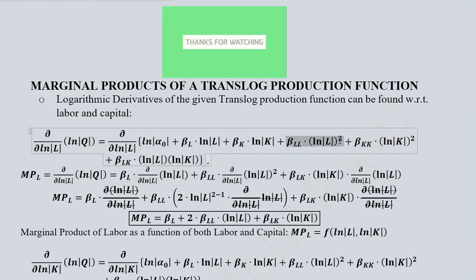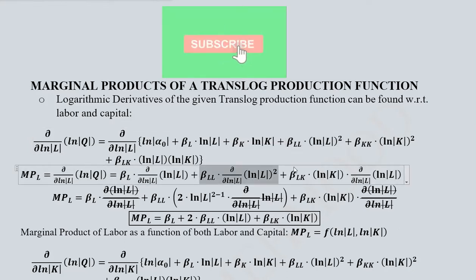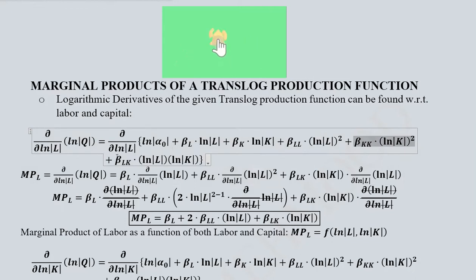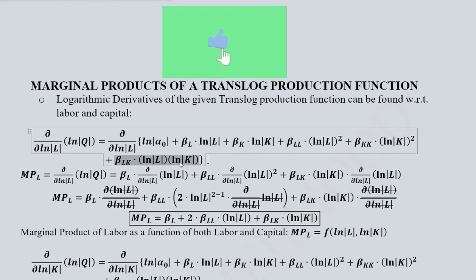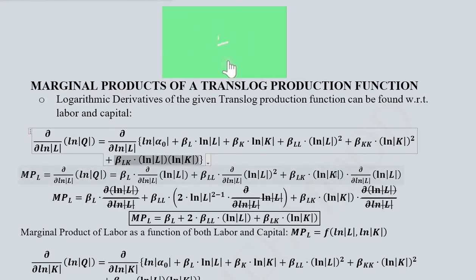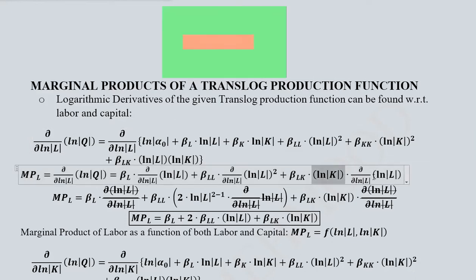This term does have natural log of labour in its squared form, so we can find its derivative as well. The following term will become 0, but the cross term will not become 0 because it contains both natural log of labour and natural log of capital. So here the natural log of capital will come out as a coefficient, whereas natural log of labour will be treated as the variable.